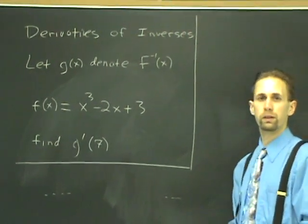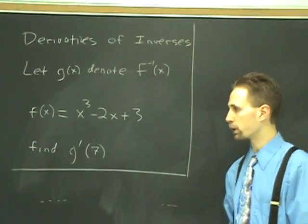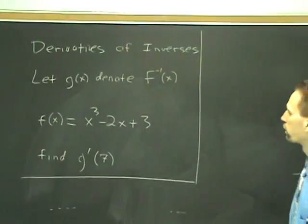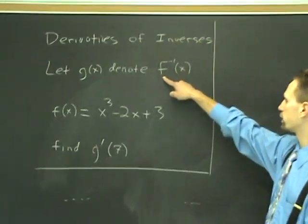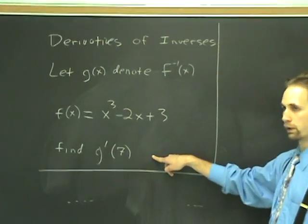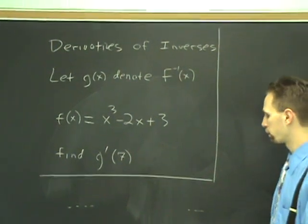Another way to figure out the derivative of the inverse problems is like so. This is how they all go. They always say let g denote the inverse of x. They will give you a function, and they'll want the derivative of the inverse at some given value of x.